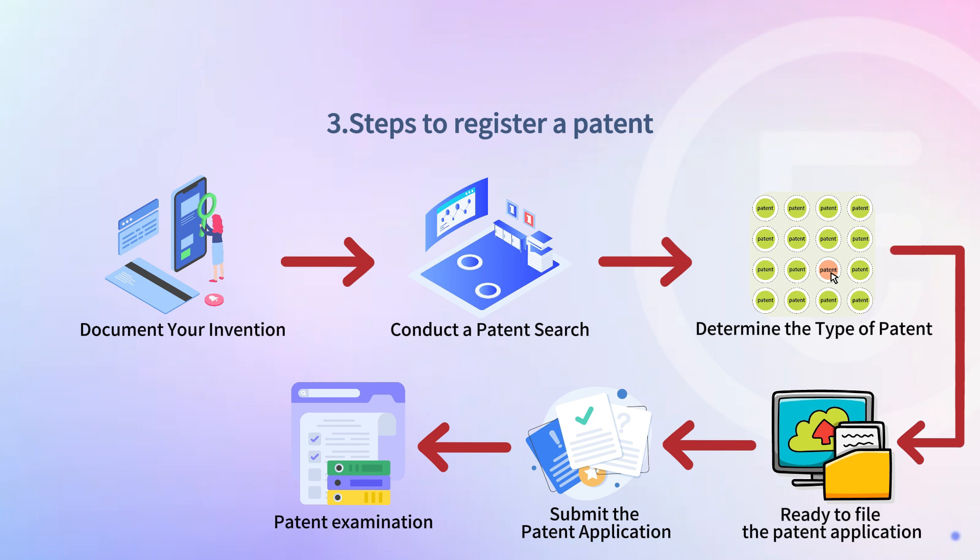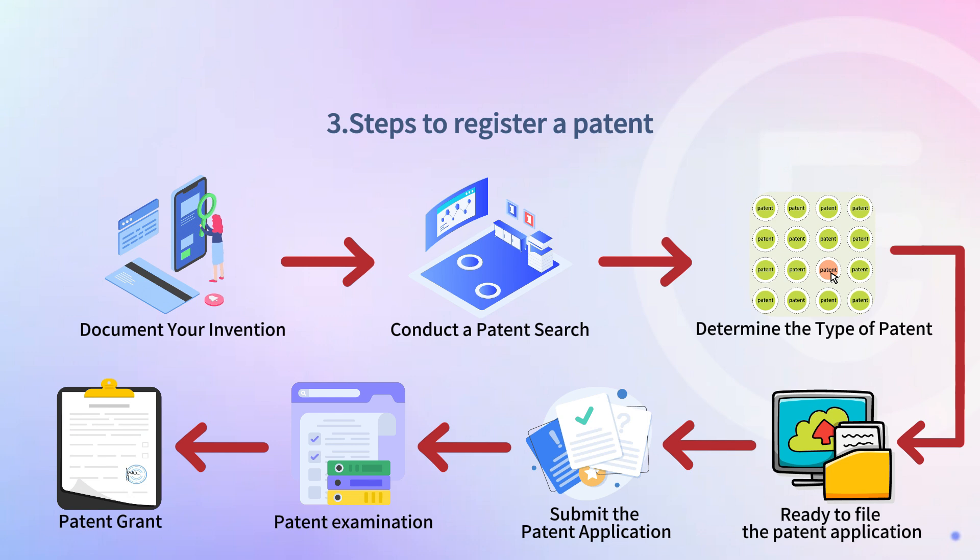No matter whether your application is accepted, you'll be notified in writing of the examiner's decision by an office action. This is normally mailed to the attorney or agent of record, or directly to you if not represented. If the examiner considers your invention meets all the requirements for patent protection, the patent will be granted. You will receive a patent certificate, and your invention is now legally protected. You have ownership of your invention and can seek patent protection when your rights are violated.